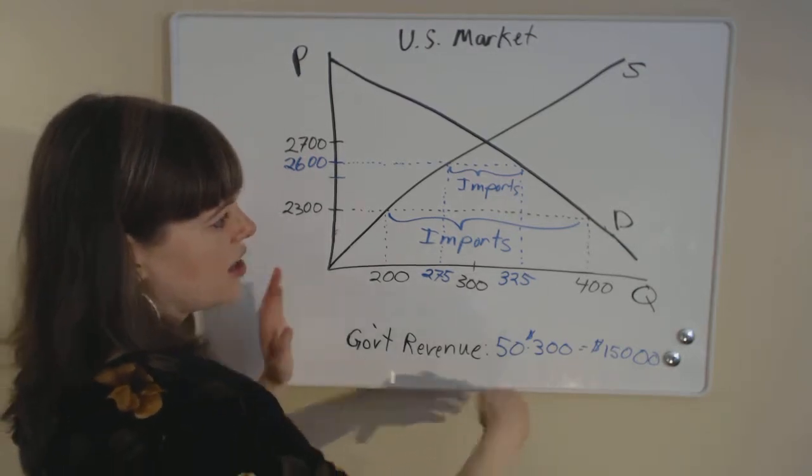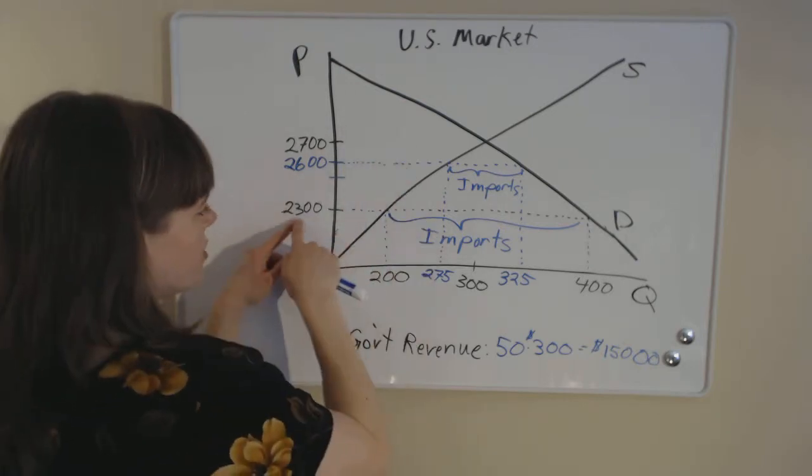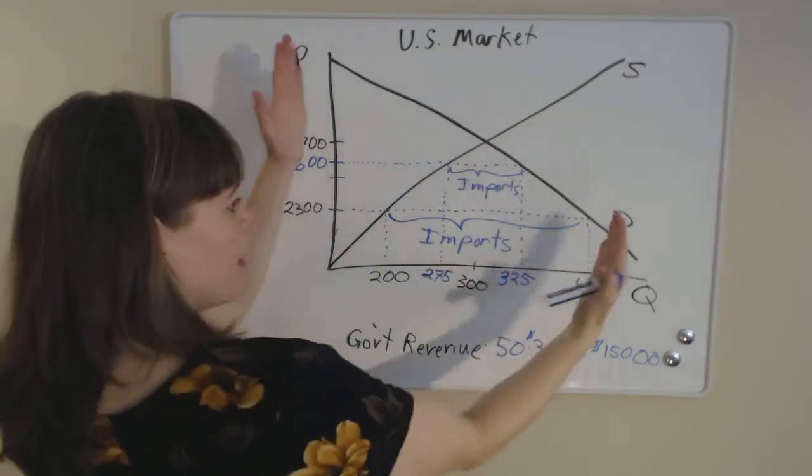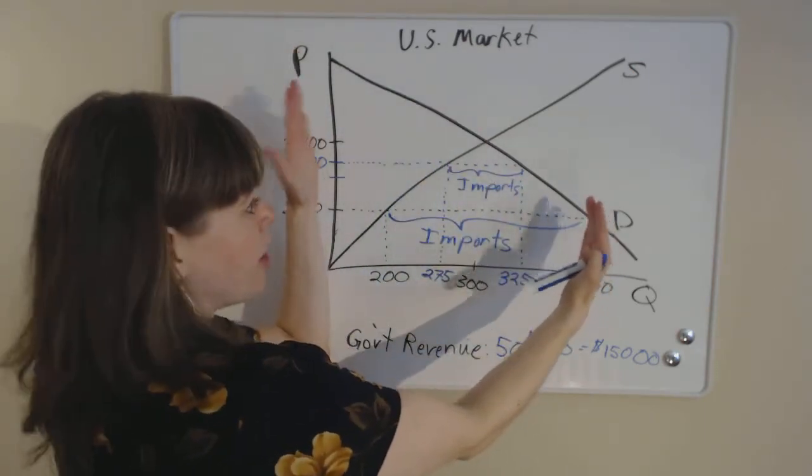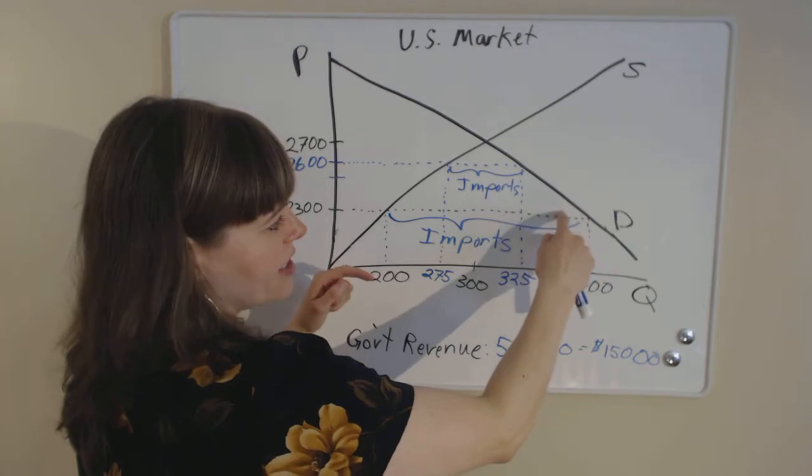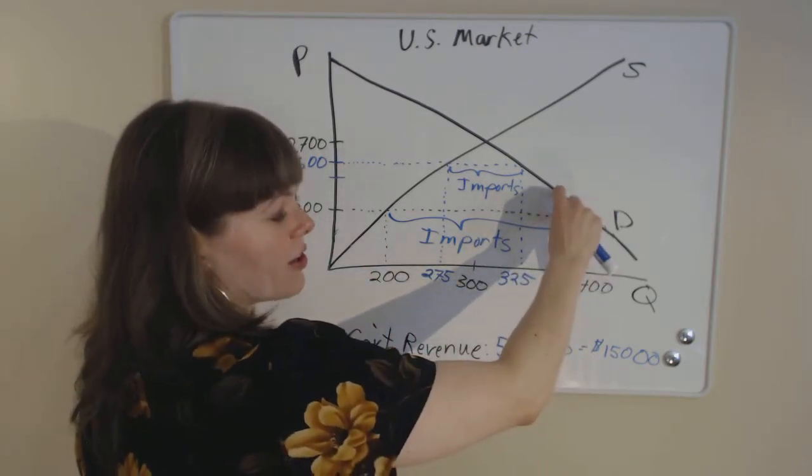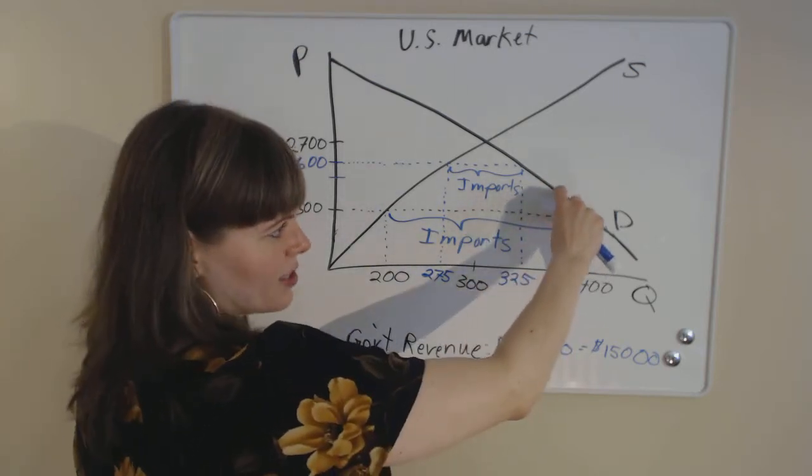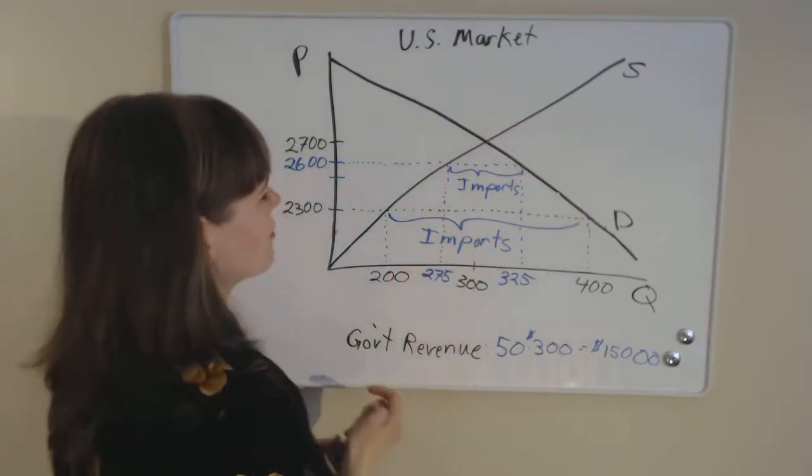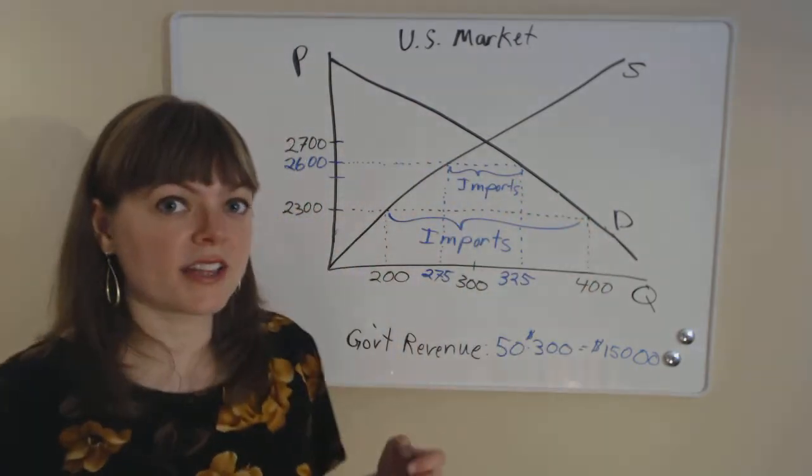And we do that by first asking which consumers were in the market when there was free trade. And we notice free trade, we have the $2,300 price. And every single consumer on this line up through the first 400 consumers are willing to pay that $2,300. So here's our base. And we have to add for each of those individuals who's buying an engine, how much extra do they value it over and above what they're paying for it. For this consumer, it's that much. For this consumer, it's this much. Is there extra value from the market?